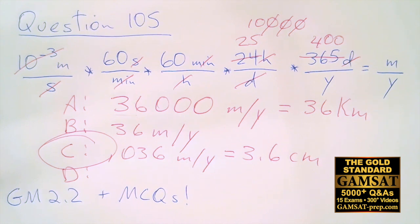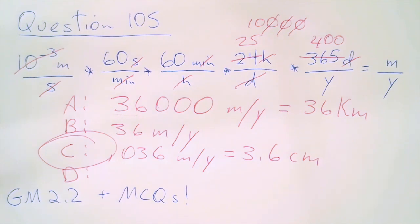In the GS1 test, we have the rate of growth of your patella. Other tests have heartbeats and other random body things to get you to use dimensional analysis.